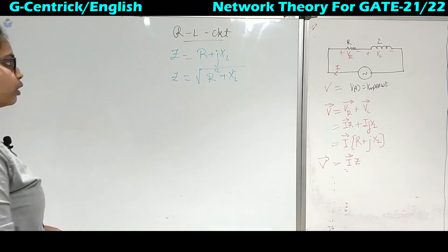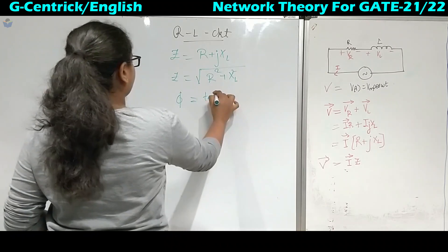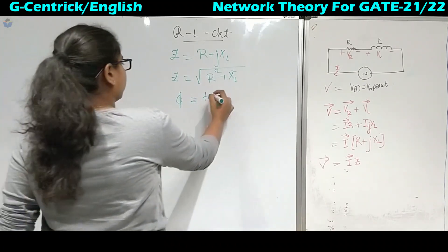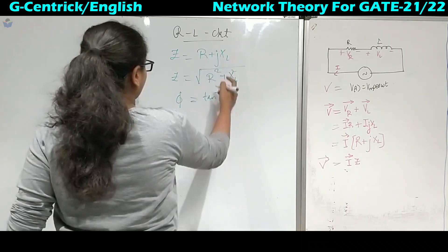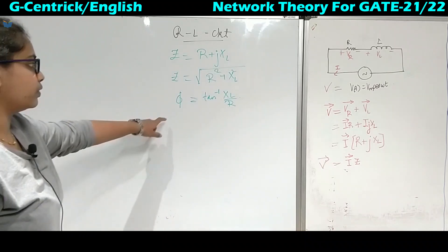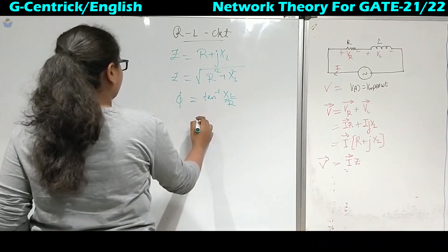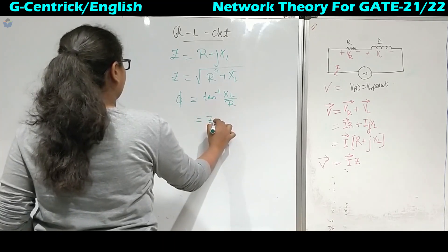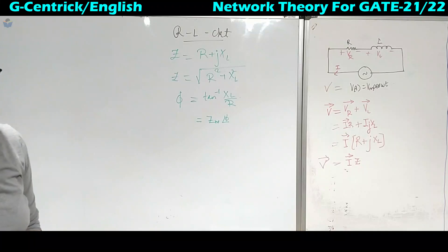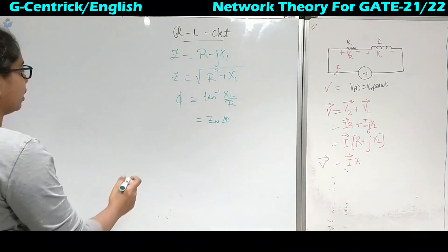To find the magnitude of Z: |Z| = √(R² + XL²). To find the angle phi: φ = tan⁻¹(imaginary part / real part) = tan⁻¹(XL / R). So Z can be represented in polar form as Zm∠φ, which is the phasor representation of the impedance Z.